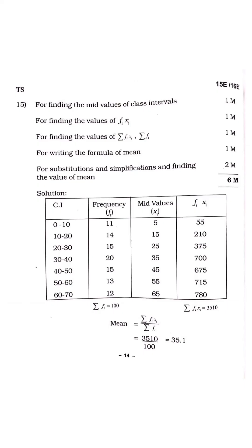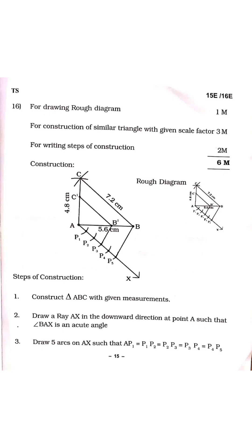For Question 15 on statistics — mean, median, and mode are very important and you will definitely get one for six marks. You need to make a table. For finding the mid values one mark, for finding f_i × x_i one mark, for finding sigma f_i × x_i and sigma f_i one mark, for writing the formula of mean one mark, and for substituting, simplifying, and finding the mean two marks — totaling six marks.